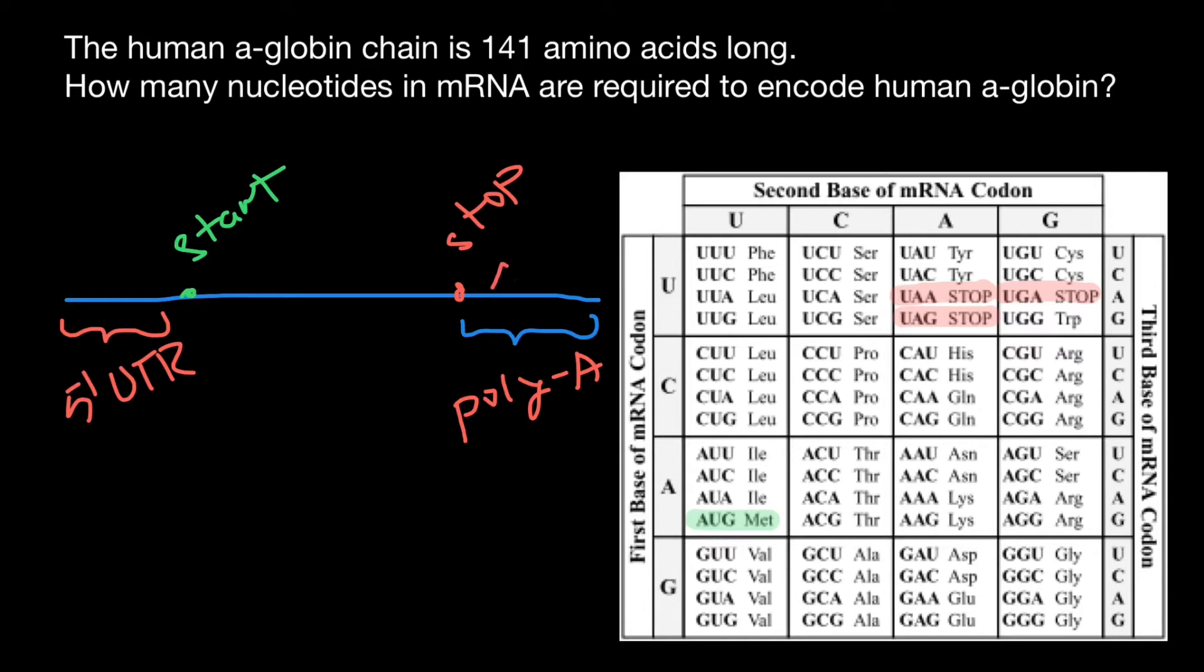This helps with the stability of the messenger RNA and specifies how many times this messenger RNA would be used to produce a protein chain.